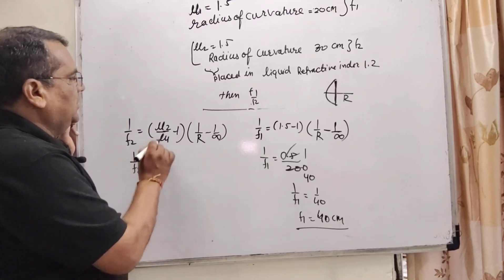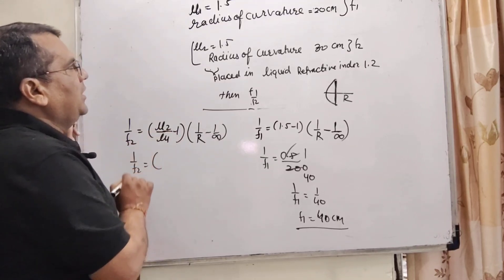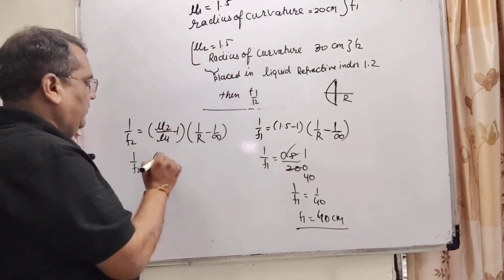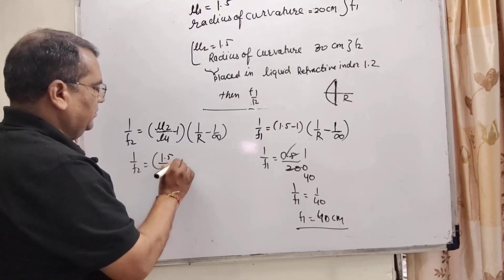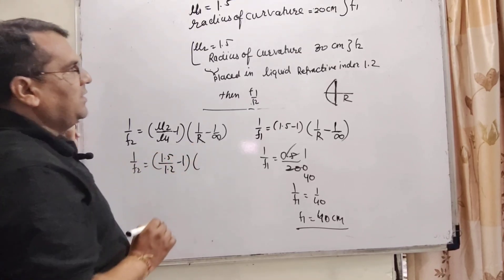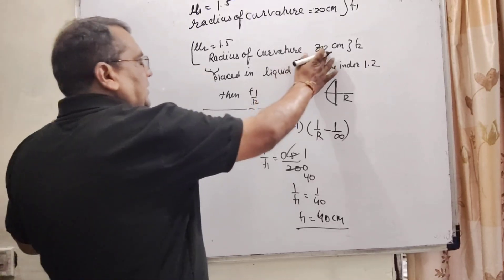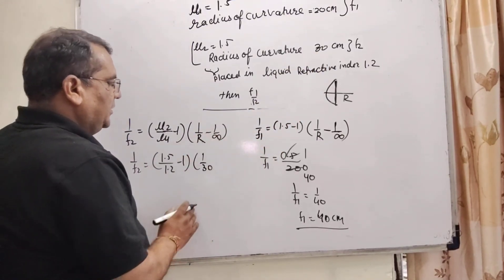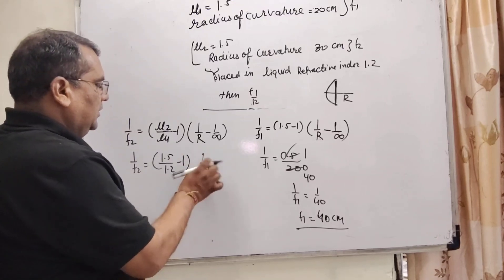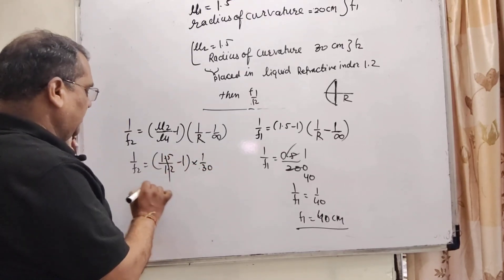1 by f2. What is the refractive index of second lens that is 1.5 and refractive index of liquid that is given 1.2 minus 1 and radius of curvature of second lens that is 30 cm. 1 by 30. Something upon infinity is 0. So here decimal is removed.